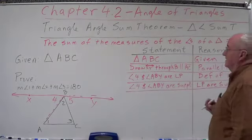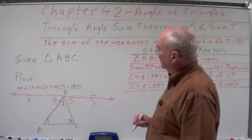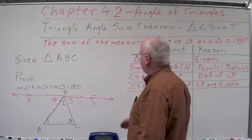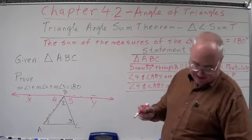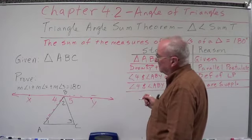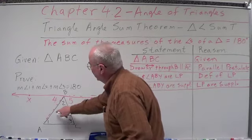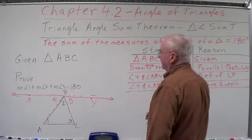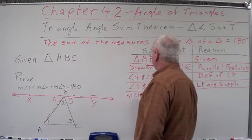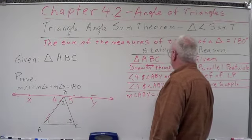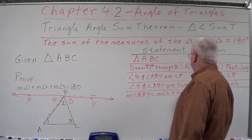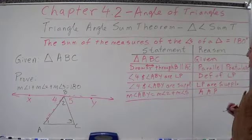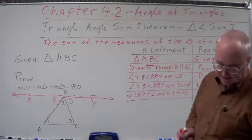The next statement is a little different. Angle 4 and angle ABY make a straight line — they're a linear pair, they're supplementary, so they add to equal 180. But what else do we know about angle ABY? It's the sum of angle 2 and angle 5. So the measure of angle ABY equals the measure of angle 2 plus the measure of angle 5, by the angle addition postulate — we can take two angles and add them to get a bigger angle.